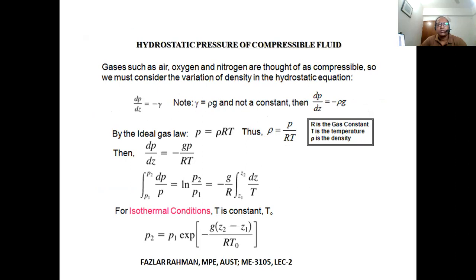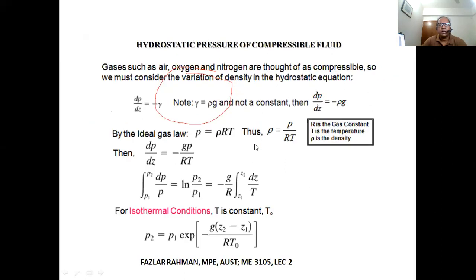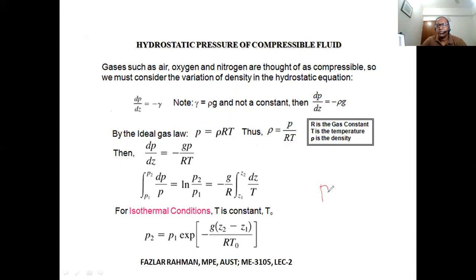I hope all of you understand easily. So we derived this equation p = ρgh for incompressible and stationary fluid. But what would be the equation if the fluid is compressible? For compressible flow, density is not constant. So our equation p = ρgh was derived from the force balance along the vertical direction.